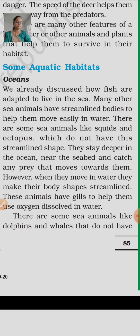So how do they survive? They stay deeper in the ocean, near the sea bed, and catch any prey that moves towards them. Animals without streamlined bodies like octopus and squids stay near the sea bed.